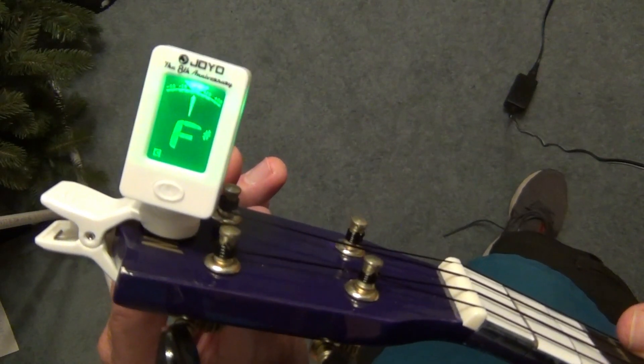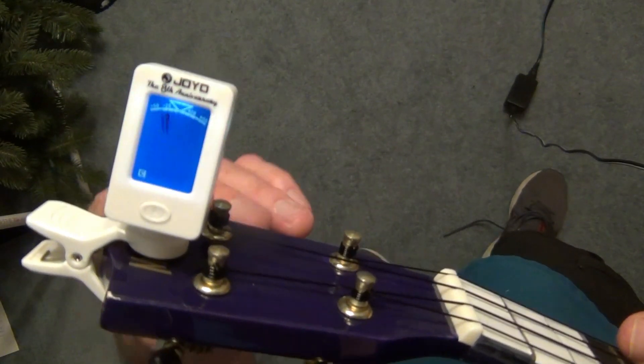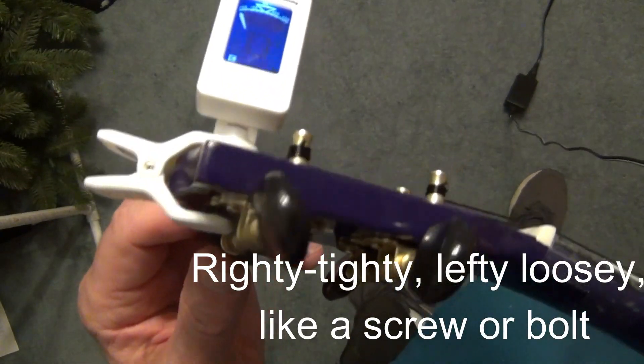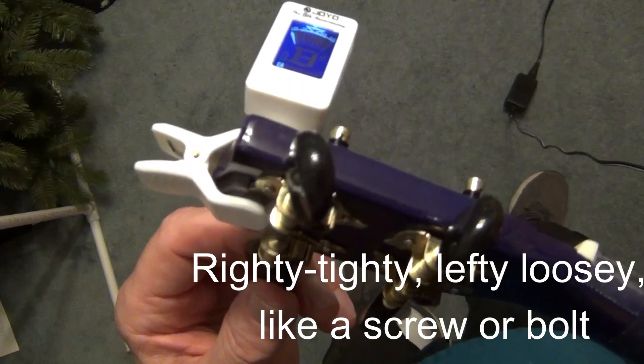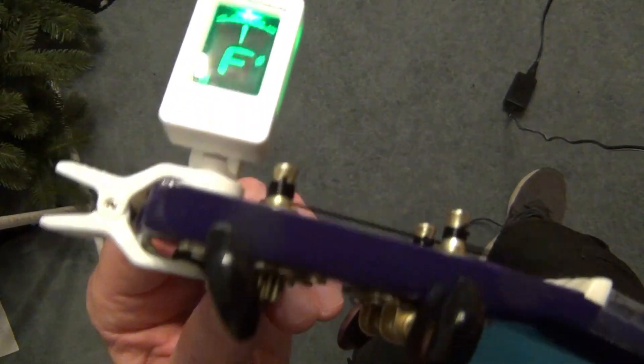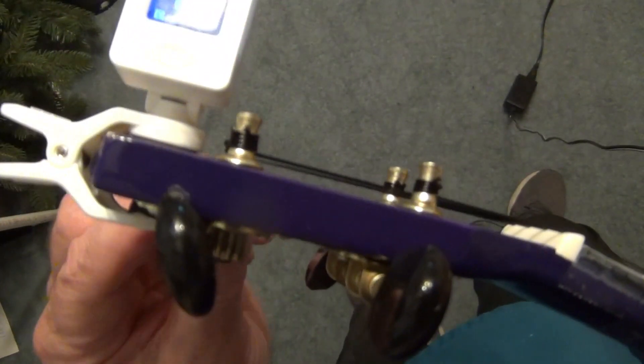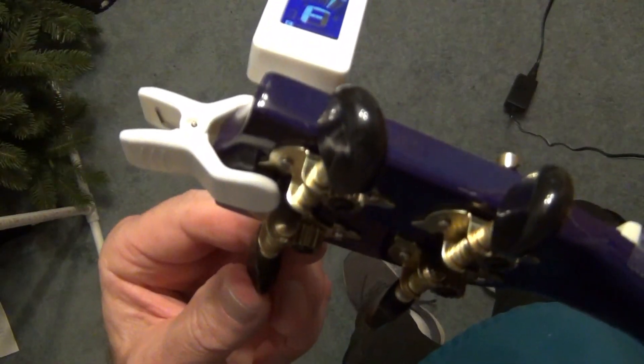That says F sharp. That means I am sharp. So I have to loosen it. This time I can follow the righty tighty lefty loosey rule. So as I hit it I'm going to go to the left to loosen it, or counterclockwise.